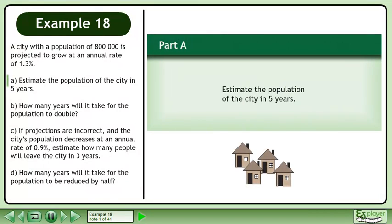A city with a population of 800,000 is projected to grow at an annual rate of 1.3%. In Part A, estimate the population of the city in 5 years.